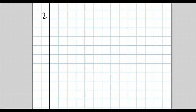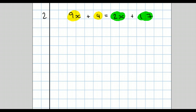Question 2: 9x plus 4 equals 2x plus 17. So we've got two terms on the left and two on the right — the things separated by plus signs or minus signs. The first thing we do is move the numbers to join each other. So this 4 is going to go to the right-hand side. Our first line of working is 9x equals 2x plus 17, and now we take away 4.